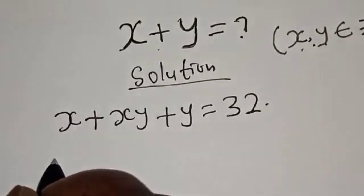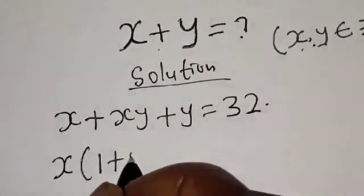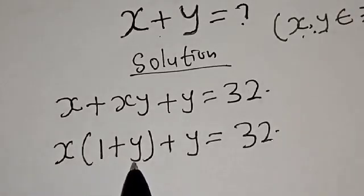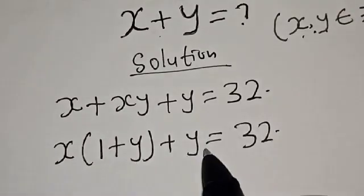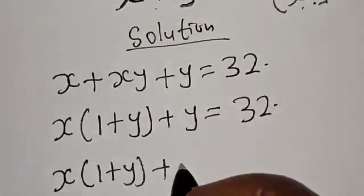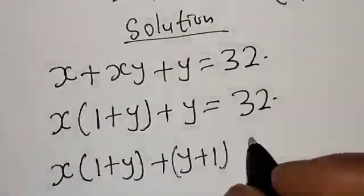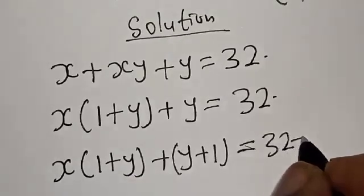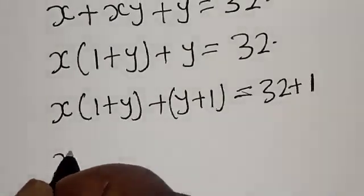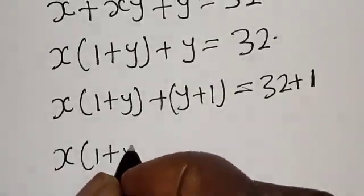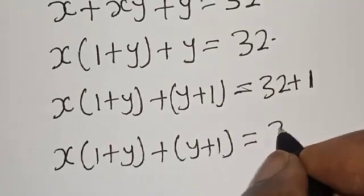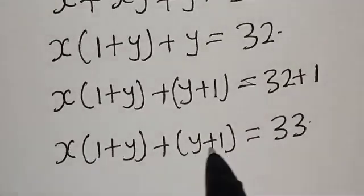Let's factor x out. We have x times (1 plus y) plus y is equal to 32. Now here we have (1 plus y) and here is y, and x is outside. Then we can add 1 to both sides: x times (1 plus y) plus y plus 1 is equal to 32 plus 1. Now we have (1 plus y) and (1 plus y), giving x times (1 plus y) plus (y plus 1) equal to 33.